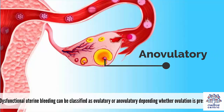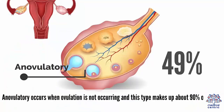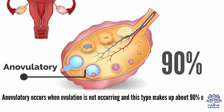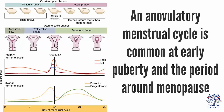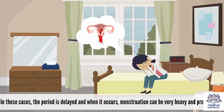Dysfunctional uterine bleeding can be classified as ovulatory or anovulatory depending on whether ovulation is present or not. Anovulatory occurs when ovulation is not occurring and this type makes up about 90% of cases. An anovulatory menstrual cycle is common at early puberty and the period around menopause. In these cases, the period is delayed and when it occurs, menstruation can be very heavy and prolonged.